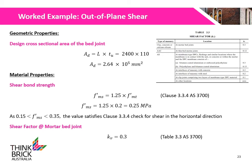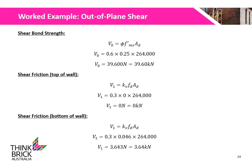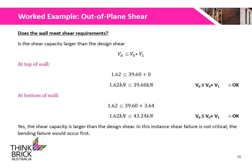The shear factor KV is 0.3 at bed joints, obtained from Table 3.3 of AS3700. The shear bond strength is calculated to be 39.6 kN. Shear friction at the top of the wall is 0, as there are no superimposed loads acting at the top. The shear friction at the bottom of the wall is calculated to be 3.64 kN. The shear capacity for both locations is greater than the design shear, and therefore the wall is okay.